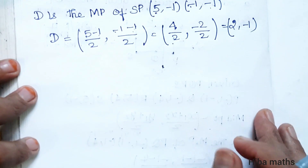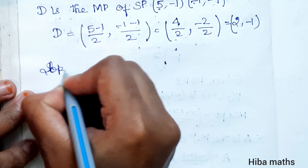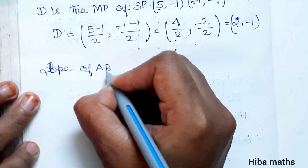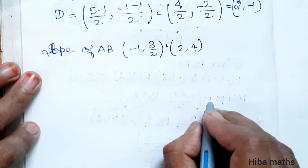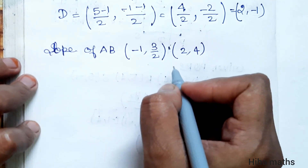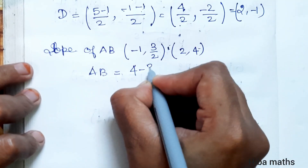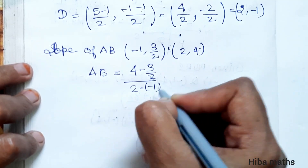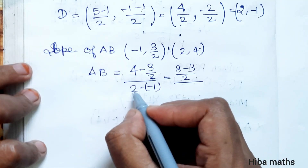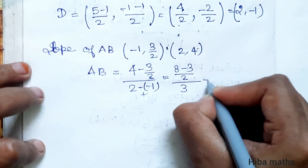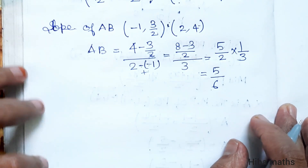Now we find the slopes of AB, BC, CD, and DA. Slope of AB: A is (-1, 3/2) and B is (2, 4). Using the slope formula: (y2 - y1)/(x2 - x1) = (4 - 3/2)/(2 - (-1)) = (8/2 - 3/2)/3 = (5/2)/3 = 5/6. So slope of AB = 5/6.